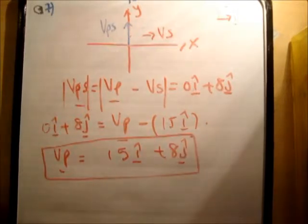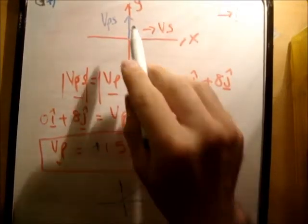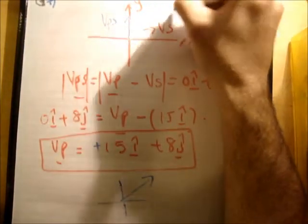So, the next thing we need to do is ask ourselves, does that make sense? So, look here. We have a positive i and a positive j. So, that puts us in this quadrant here. And look, where did I say, where did I anticipate that we're going to go? In that direction there.